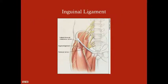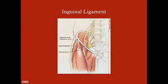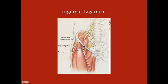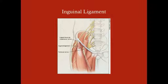Anatomically, the inguinal ligament is going to be important both for inguinal hernias and for femoral hernias. The inguinal ligament extends on your hip from your anterior superior iliac spine — this portion of the iliac crest is more anterior than the rest of the iliac crest, which moves posteriorly. It runs from the anterior superior iliac spine down to the pubic crest. That's the inguinal ligament.